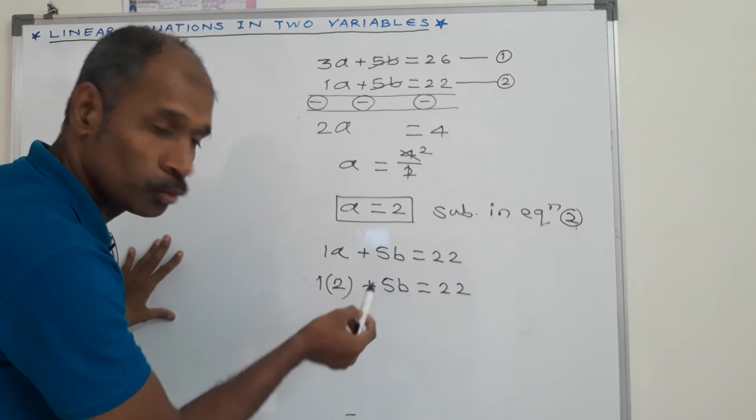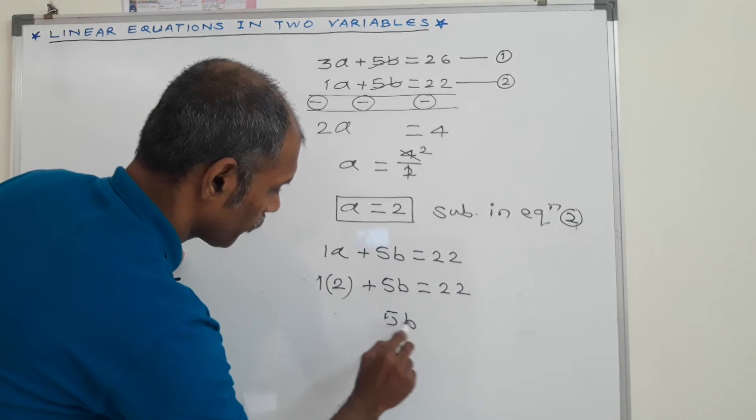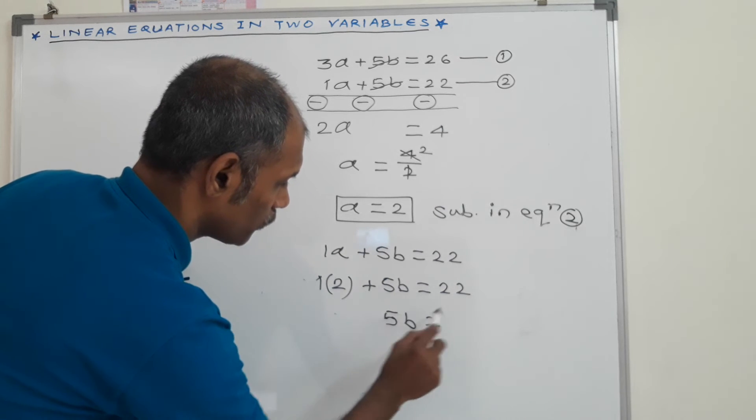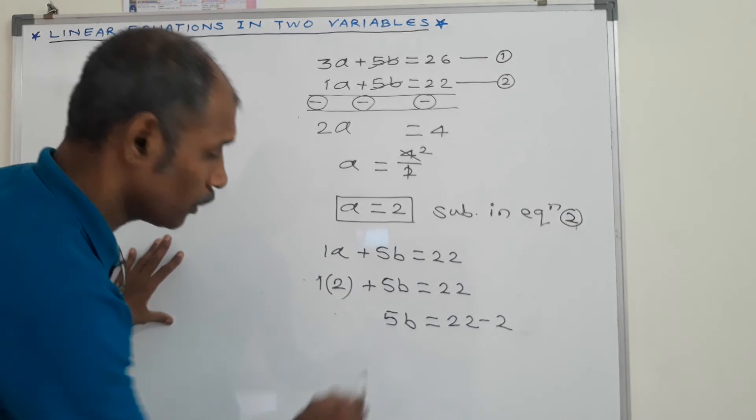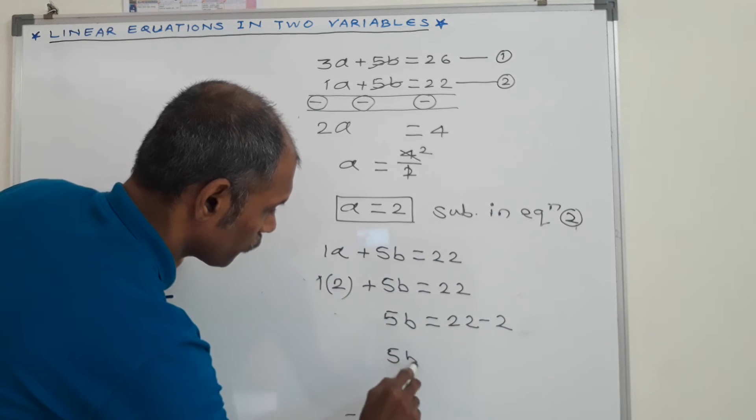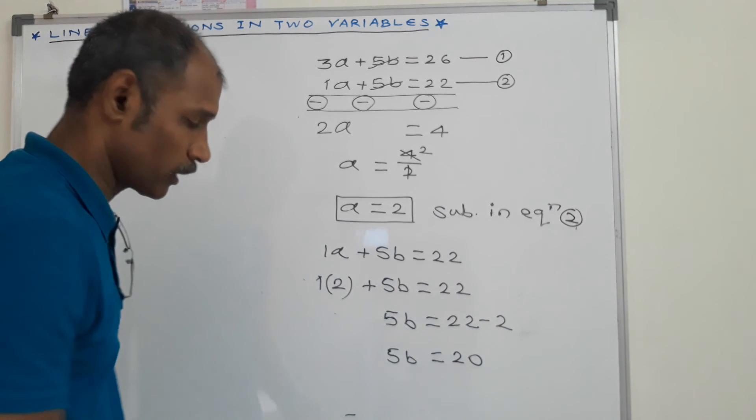1 into 2 is 2. We take this 2 to the right side. 5B is equal to 22 minus 2. Therefore 5B is equal to 20.